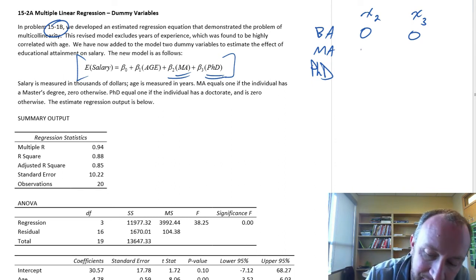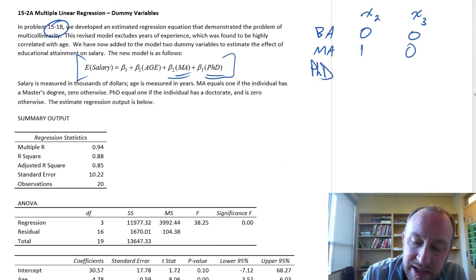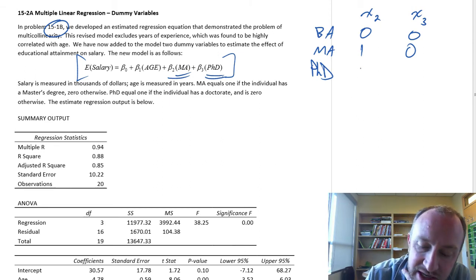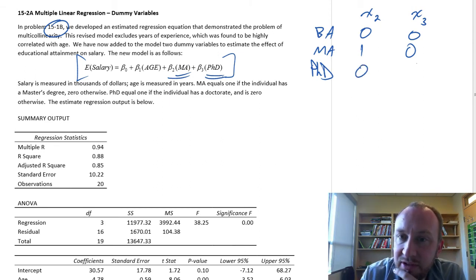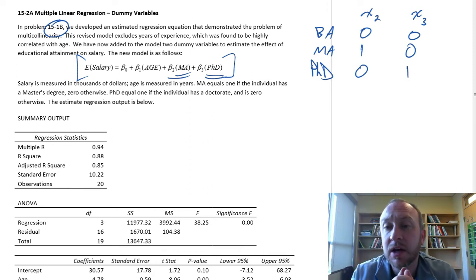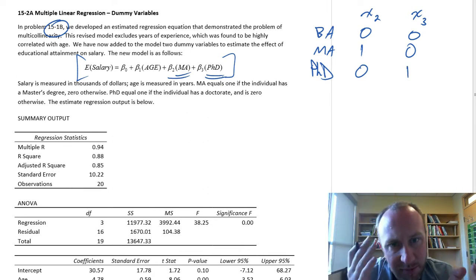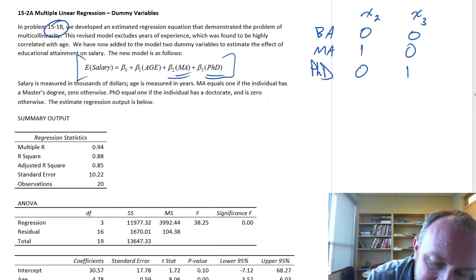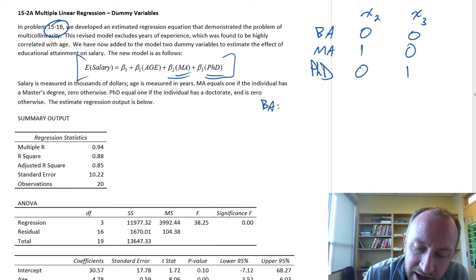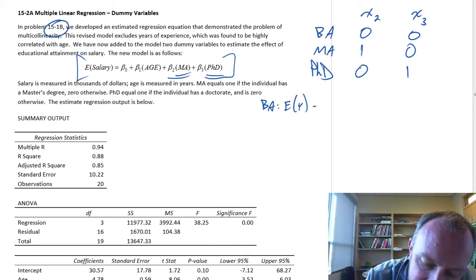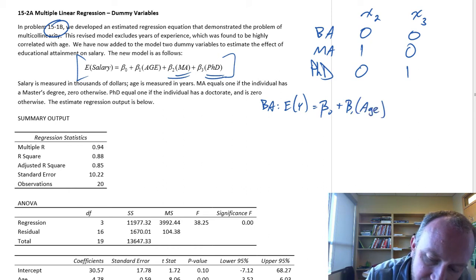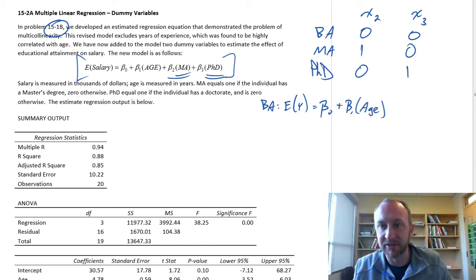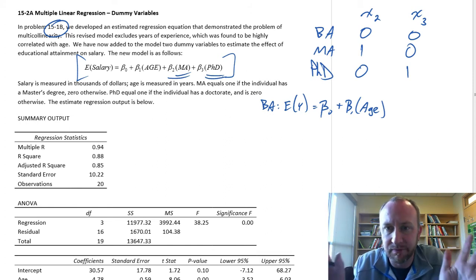For a Master's degree, x2 has a value of one and x3 is zero. For a PhD, x2 has a value of zero and x3 has a value of one. So what does all this mean? In a way, we now actually have three regression equations. If we look at somebody with a BA, the expected value is beta zero plus beta one times age, because both dummy variables have a value of zero, so they don't even matter.